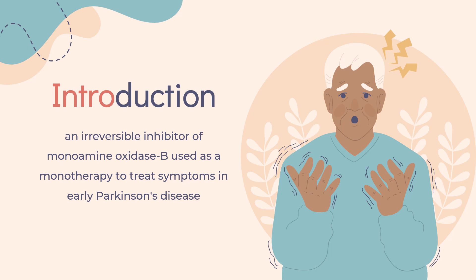Rasagiline is an irreversible inhibitor of monoamine oxidase B, used as a monotherapy to treat symptoms in early Parkinson's disease, or as an adjunct therapy in more advanced cases. The racemic form of the drug was invented by Aspro Nicholas in the early 1970s. It was brought to market by Teva in partnership with Lundbeck in Europe and Eisai in the US. It was approved in Europe in 2005 and in the US in 2006.